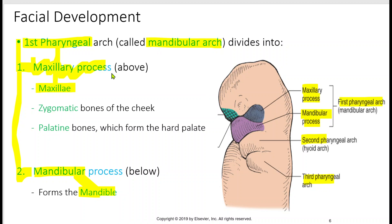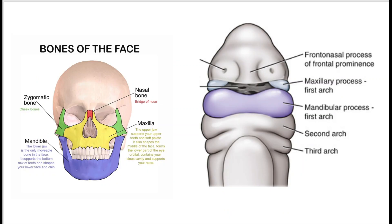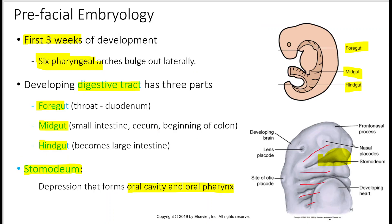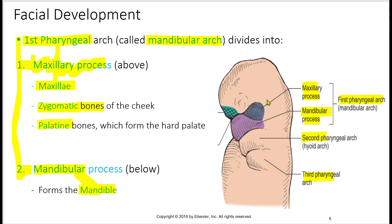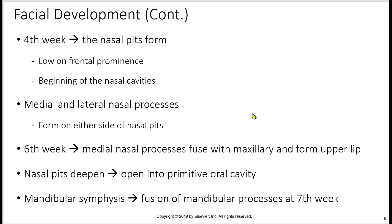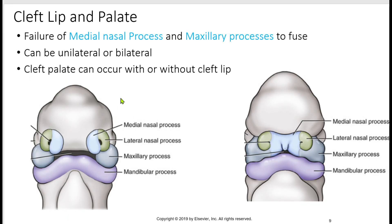The maxillary process also forms the zygomatic bone of the cheek and the palatine bone — so not only the maxilla but also the zygomatic and palatine. You have to know what the maxillary process makes and what the mandibular process makes. Both the maxilla and mandible come from the first pharyngeal arch; the second and third arches are also visible in lateral and frontal views.